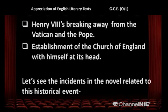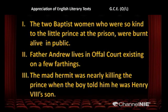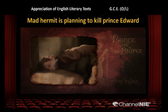Let us see the incidents in the novel related to this historical event. First, the two Baptist women who were kind to the little prince at the prison were burnt alive in public. Second, Father Andrew lived in Orville Court, surviving on a small pension — you can see he was driven away from his church. Third, the mad hermit was nearly killing the prince when the boy told him he was Henry VIII's son. Let's go to the video clip to see how the mad hermit tries to kill Prince Edward.